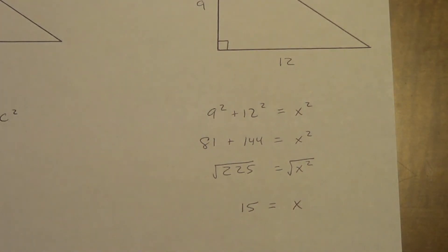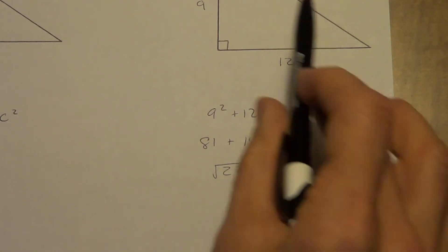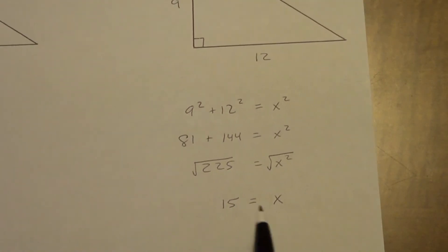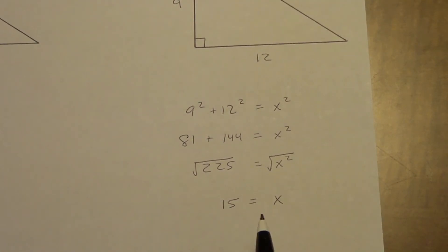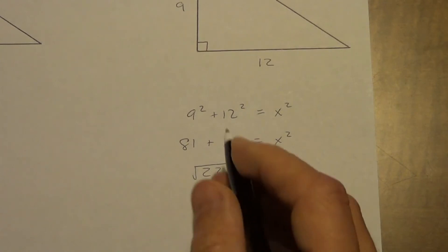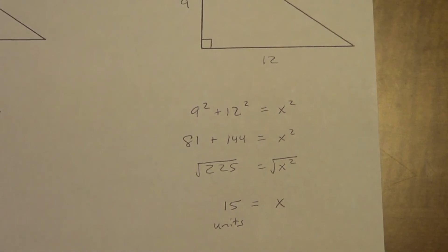Technically, the square root of X squared is positive or negative X — you'll talk more about that in algebra or calculus. But for now, lengths of triangles are always positive, so we're only going to deal with the positive square root. Don't forget your label — we aren't given one, so we put 'units.' It could be inches, feet, yards, anything like that.